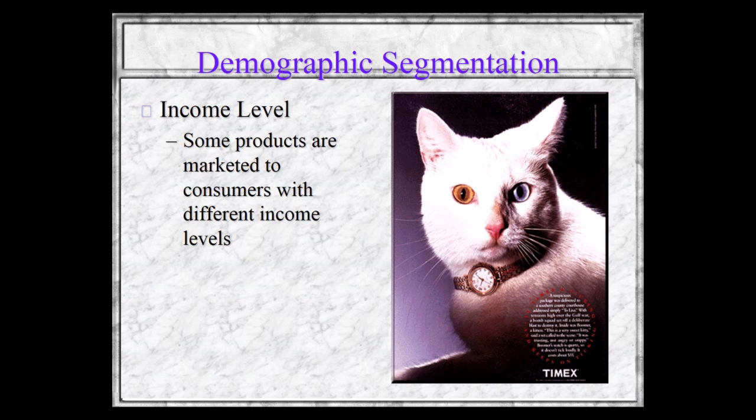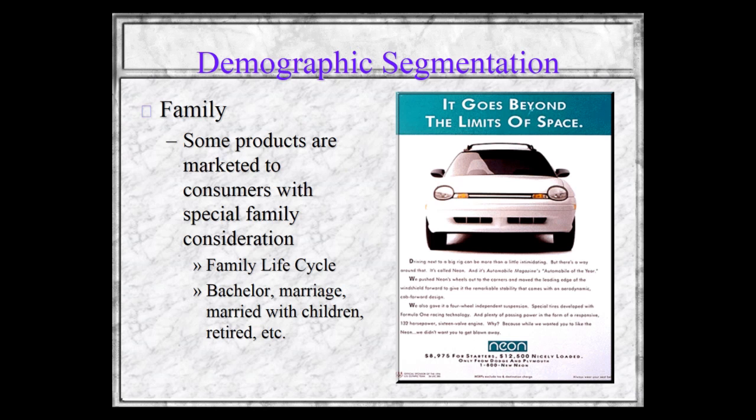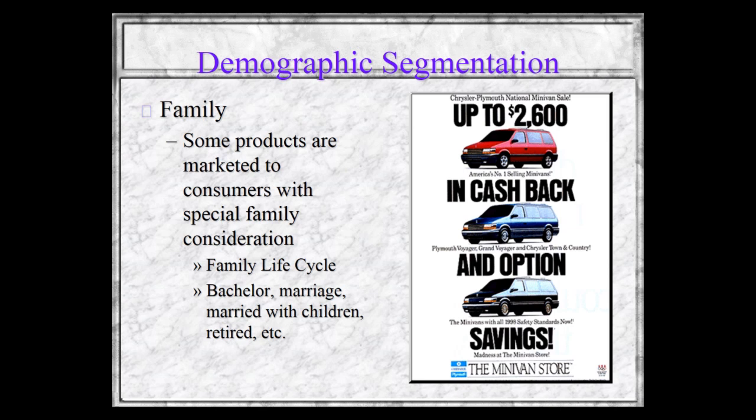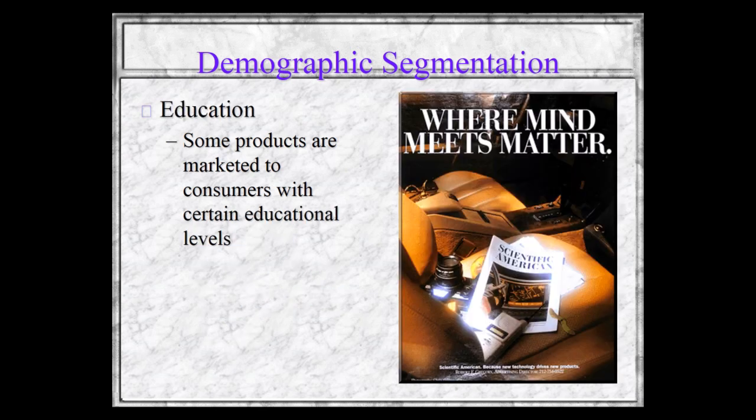Some products are marketed to consumers with special family considerations — the so-called family life cycle. For example, the Neon is targeted to younger people in the family life cycle, while minivans are targeted to people a bit later in the family life cycle with children. Some products are also marketed to consumers with certain education levels — here's Scientific American going after a higher education level.